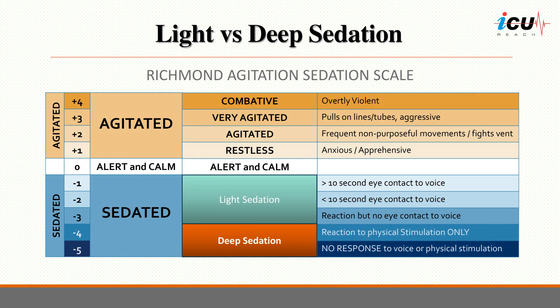In general, a RASS score of minus 1, minus 2, or minus 3 is indicative of light sedation, where the patient can react to verbal stimulation. This level of sedation is suitable for conducting the CAM-ICU evaluation. Conversely, a RASS score of minus 4 or minus 5 represents deep sedation, which requires assessment through tactile or noxious stimuli.